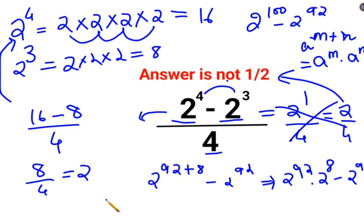So the simplified form should be 2 raised to 92 taken out, and this is 2 raised to 8 minus 1.